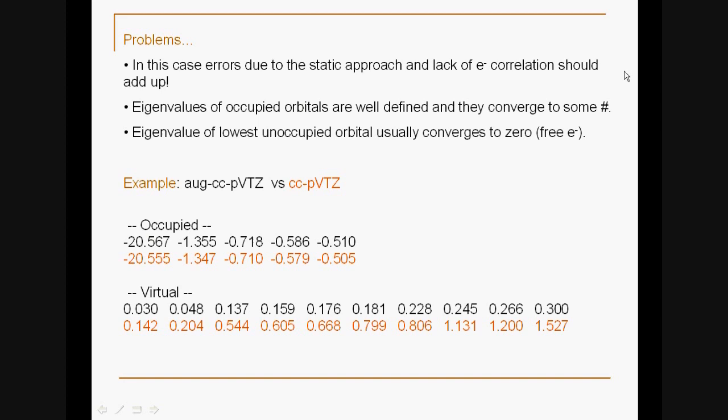Another problem with this approach is that eigenvalues of occupied orbitals are well defined and they converge to some number as you increase the size of your basis set. However, eigenvalues of the unoccupied orbitals are not so well defined, and usually the lowest unoccupied orbital converges to zero.